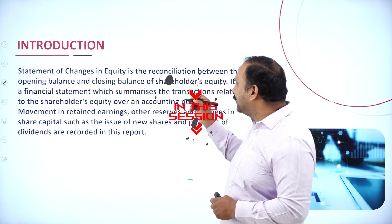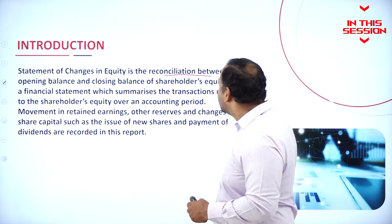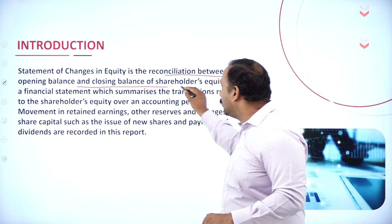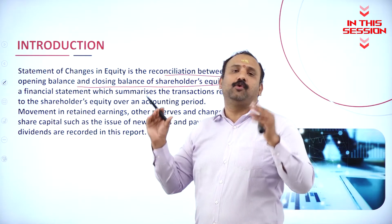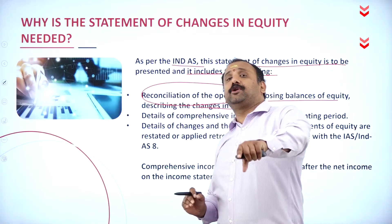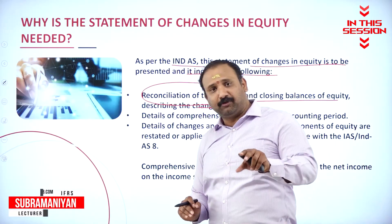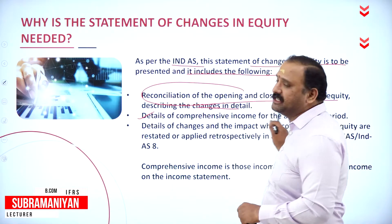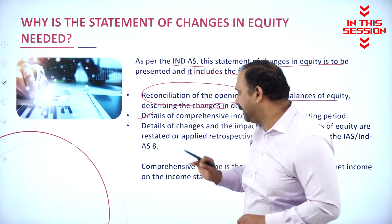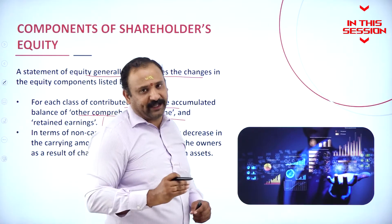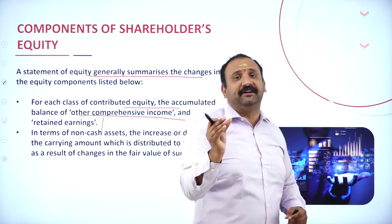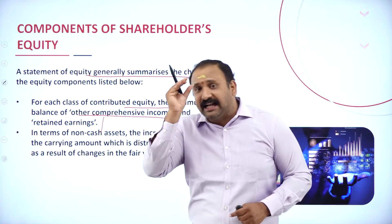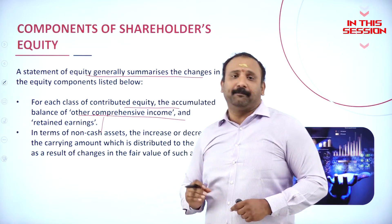The statement of changes in equity is a reconciliation between the opening balance and the closing balance of the shareholder equity. It tells you what are all the changes and how the changes have to be measured, followed by details of the comprehensive income of the accounting period. Under each subheading, there might be a retained earnings, a balance transfer, and a comprehensive income obtained by the company.